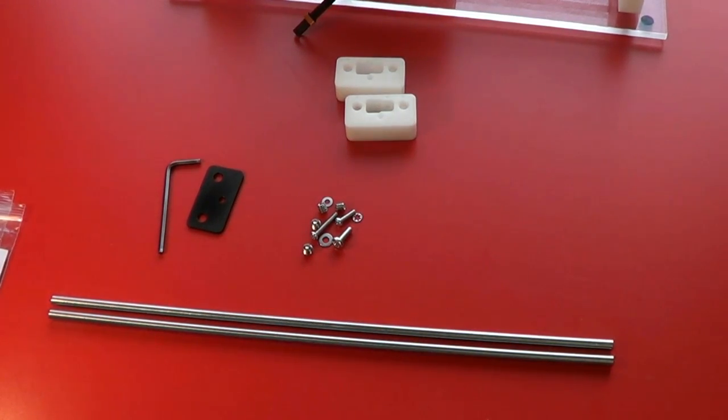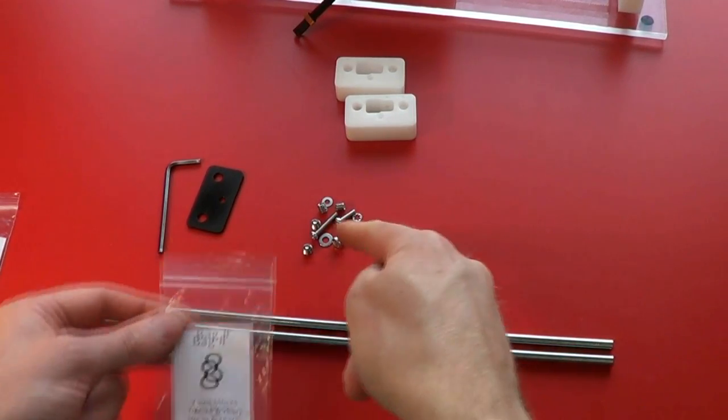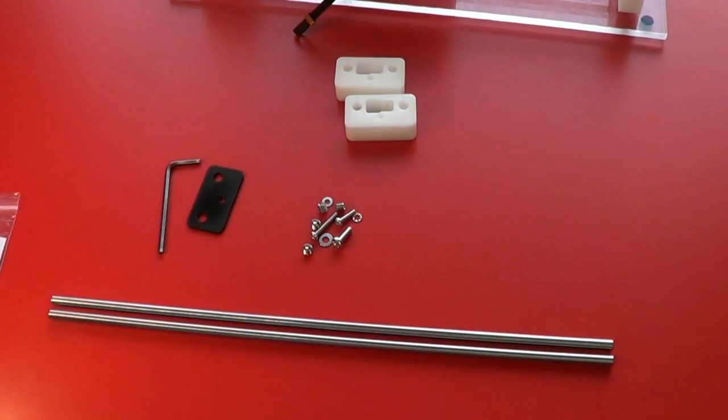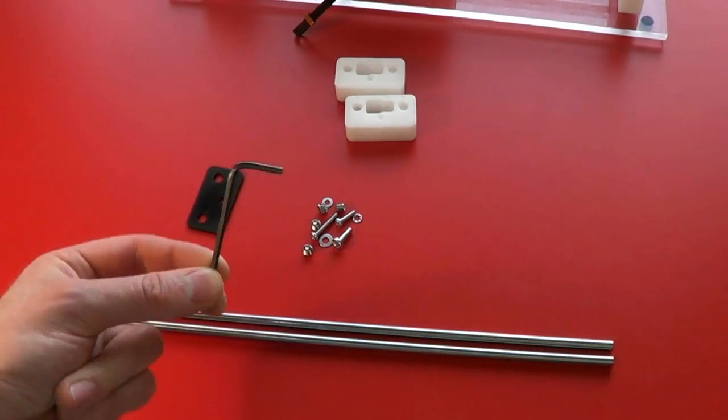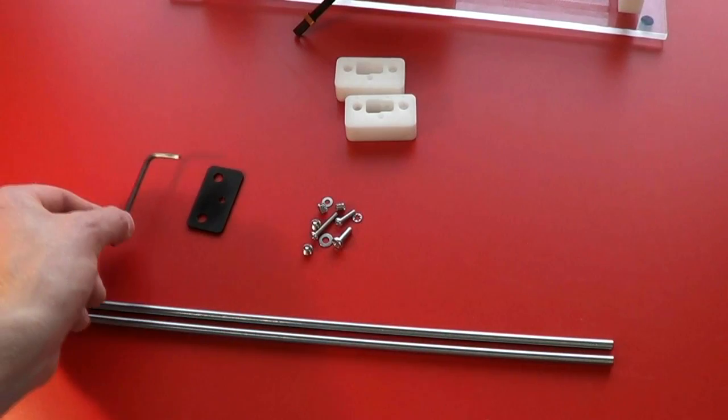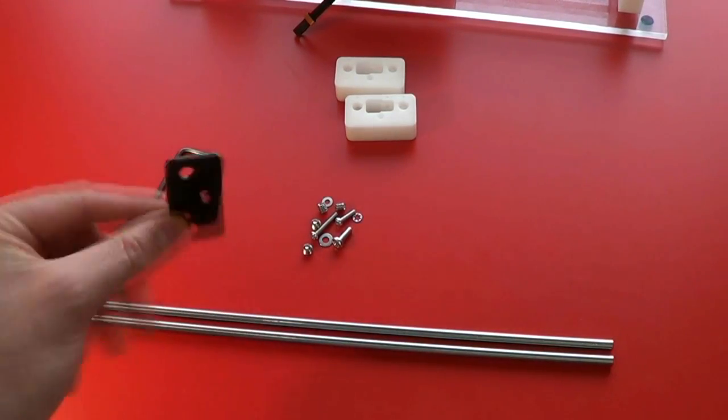We're now ready to assemble the Y-slide. For this you'll need the hardware from bag number eight, and from bag 12, the tools bag. You'll need the larger of the two allen keys, this is the three millimeter allen key, and this spacer plate.